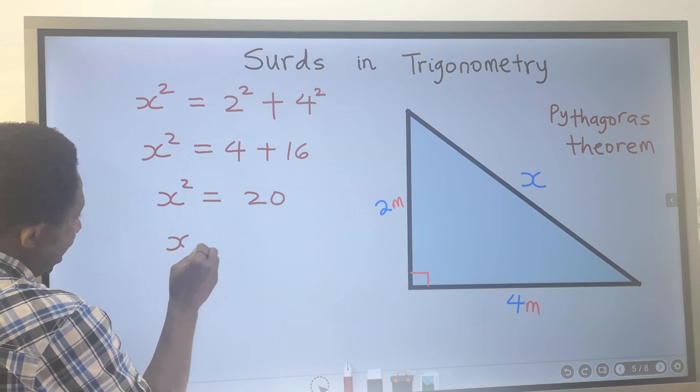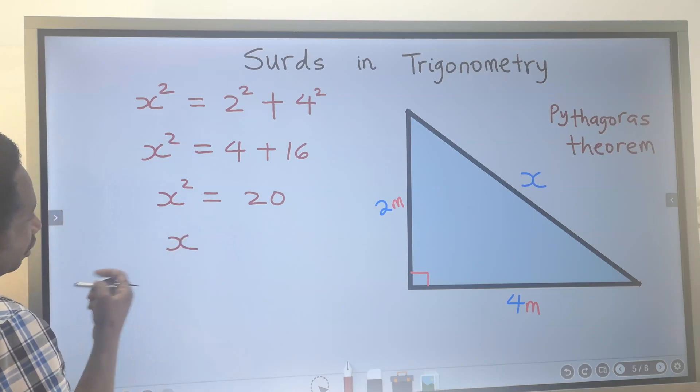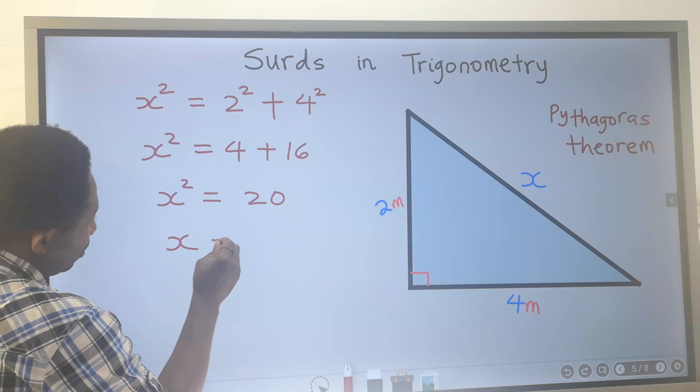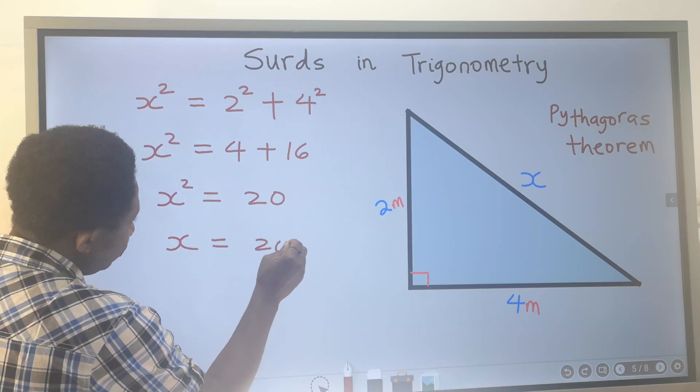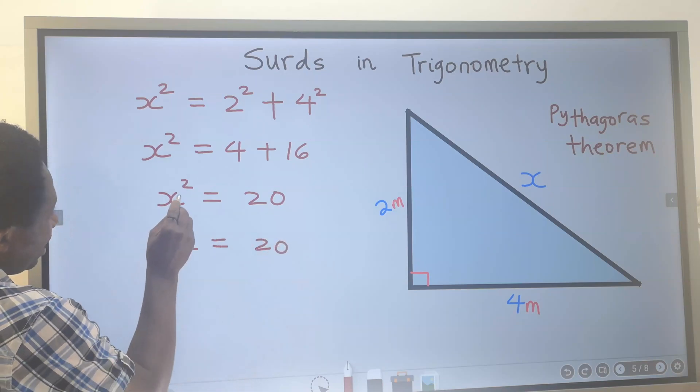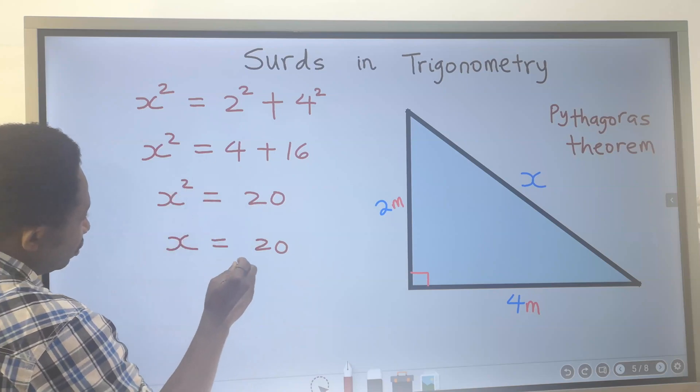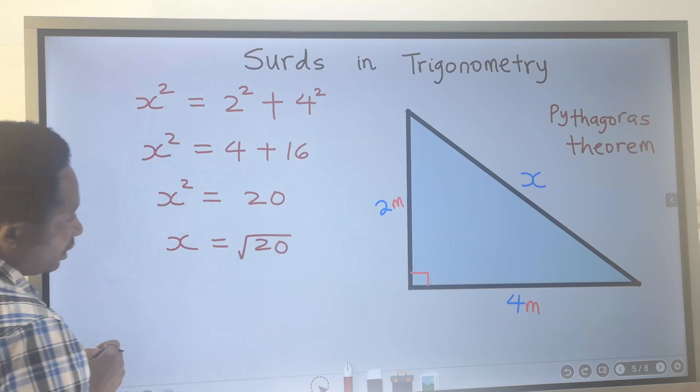This is x squared, but we are looking for x. Next, on the other side we have 20. When this square moves across, it becomes the square root of 20.